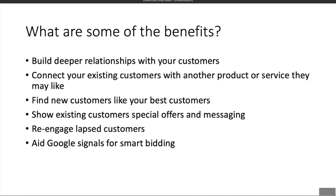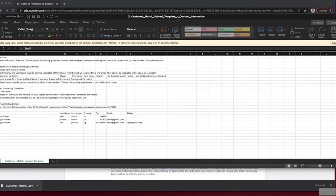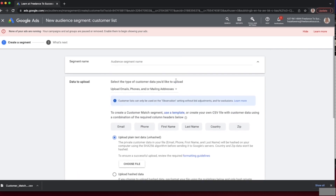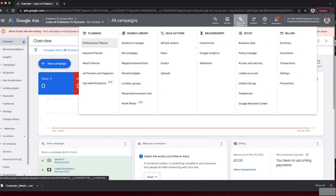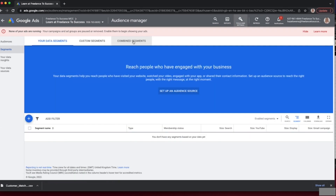Now I'll jump into the Google Ads interface to show you how to create a Customer Match list. You create it using a CSV file containing customer data, which you upload directly into Google Ads. There's a template available. It's important to ensure you format your customer data correctly. In Google Ads, navigate to Tools and Settings, then under Shared Library you'll find Audience Manager. If you haven't got any audiences it'll look blank, but click the plus sign and choose 'Customer List'.